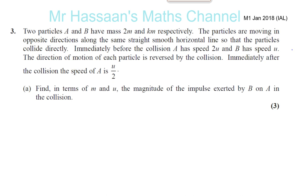Now, for question number three, we have two particles, A and B, which have mass 2m and km, respectively.